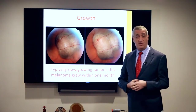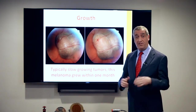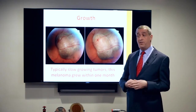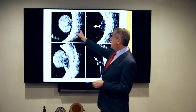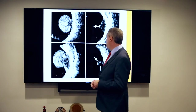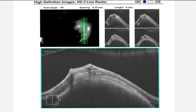Typically melanomas are slow growing, but this particular tumor grew quite noticeably in just a month — growth is perhaps the most important finding in diagnosing a melanoma. The mushroom shape comes in different sizes and distributions: classic mushroom, tilted mushroom, really tiny mushroom. It doesn't have to be just that classic shape. On OCT you can even see a mini mushroom coming out of the tumor that might not be seen clinically.